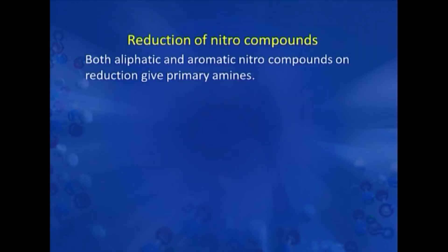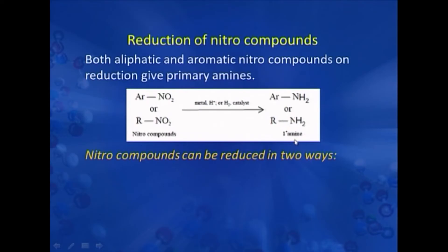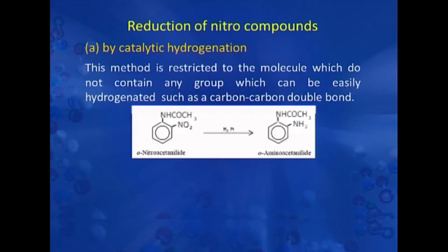Both aliphatic and aromatic nitro compounds on reduction give primary amines. Both of them, when treated with metal in the presence of a hydrogen catalyst, form primary amines. Nitro compounds can be reduced in two ways. One is by catalytic reduction, in which a solution of nitro compound in alcohol is shaken with finely divided nickel or platinum catalyst in hydrogen gas. This method is restricted to molecules which do not contain any group which can be easily hydrogenated, such as a carbon-carbon double bond.